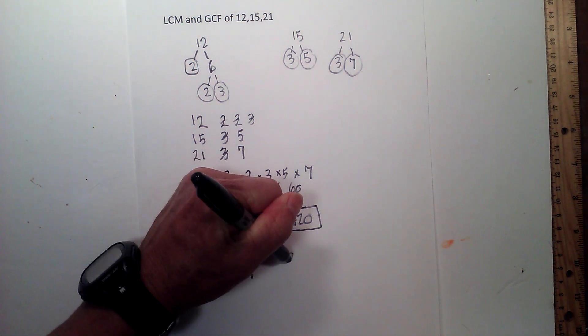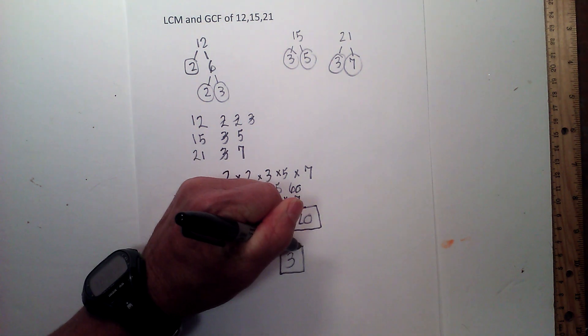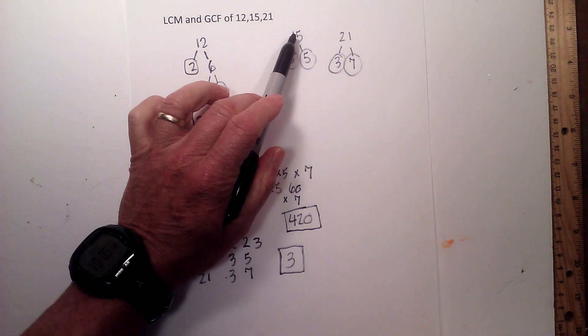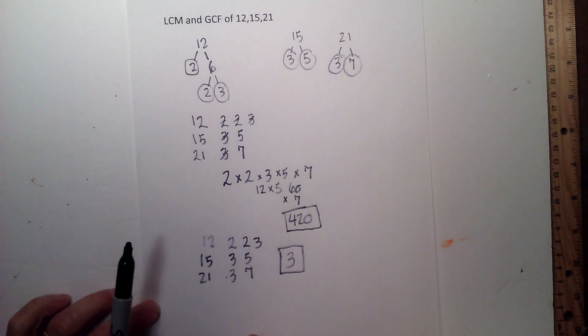So the GCF is 3. So there we go, the GCF and the LCM of 12, 15, and 21.